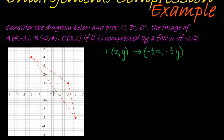This is 4, negative 3, so that's A. B is negative 2, 4, so that's B, and C is 3 and 1. Okay, so let's find A accent, B accent, and C accent.